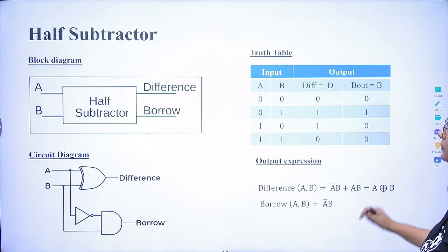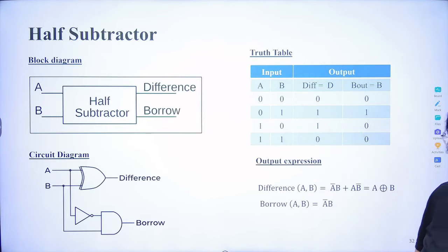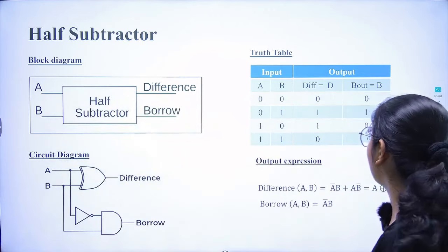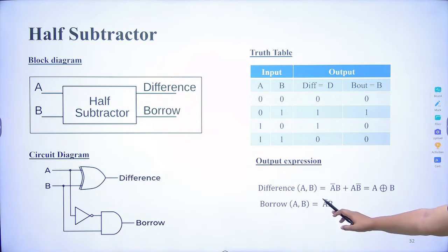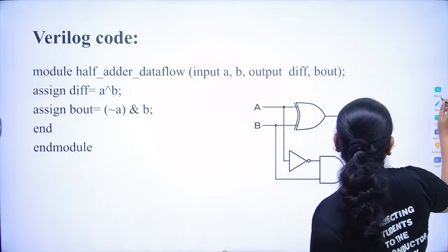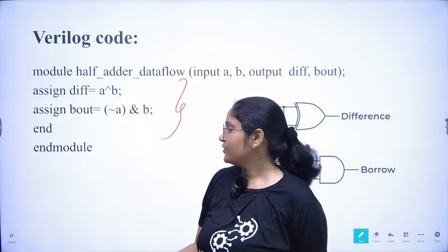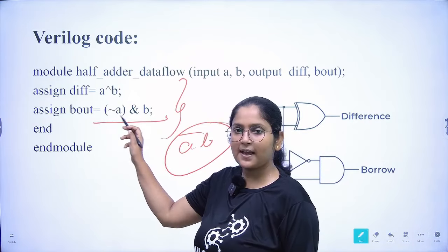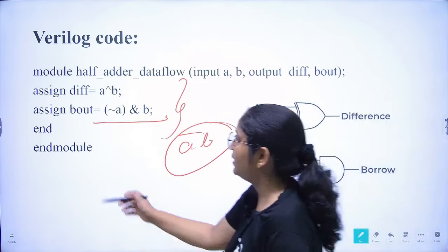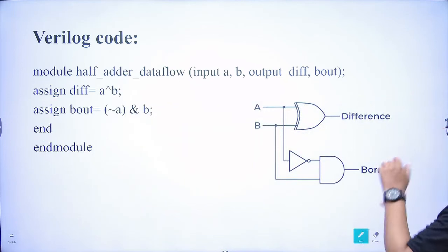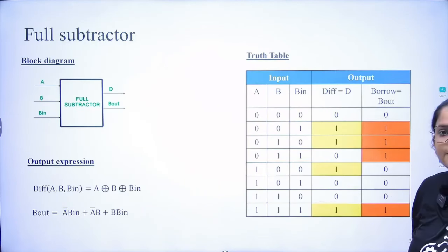Now for the half subtractor: the expression for difference is a XOR b and for borrow is a_complement AND b. The code uses these expressions — we complement a and AND it with b for the borrow. We're not using procedural blocks here, just assign statements.